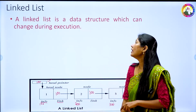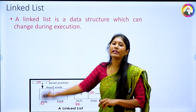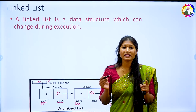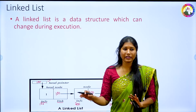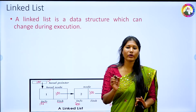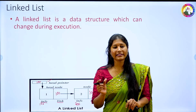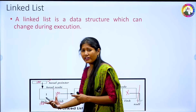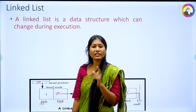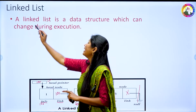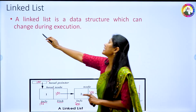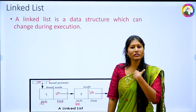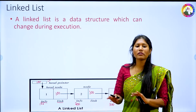A linked list is a data structure which can change during execution. In an array, the first disadvantage was static memory allocation — if you declare A[10], exactly 10 elements are allocated. But in a linked list, it is dynamic memory allocation. We use a keyword called malloc at the time of coding. When we call malloc inside a create-node function, memory will be allocated dynamically. If I want to enter only three elements, only those three elements' memory will be created. If later I want a fourth element, I can add it — there is no restriction, unlike arrays.